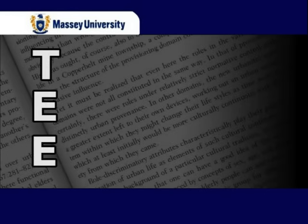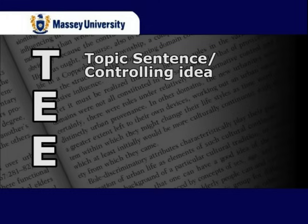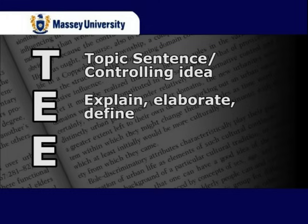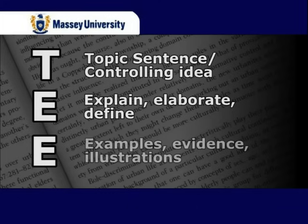Now that we have the tenses sorted out, let's take a look at some pointers for writing organized paragraphs. A well-written paragraph, and consequently a well-written thesis, follows the formula TEE: T for topic sentence or controlling idea; E for explain, elaborate, define; and the second E for examples, evidence, illustrations.